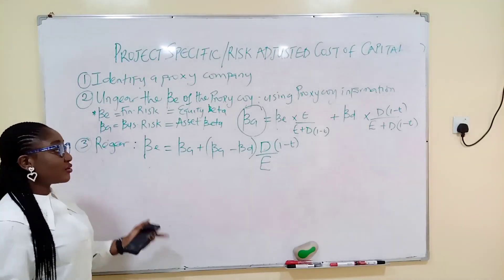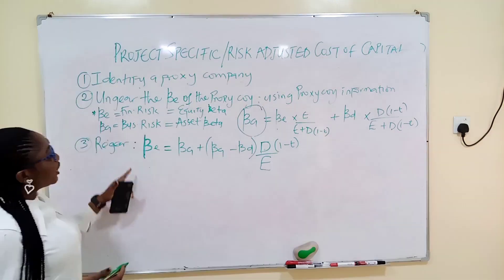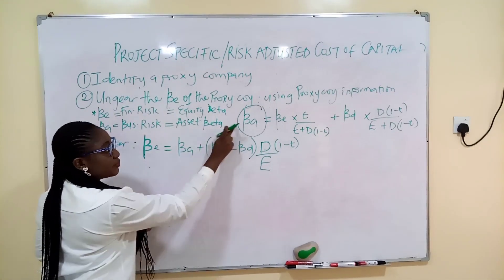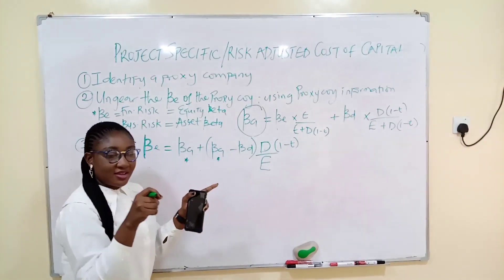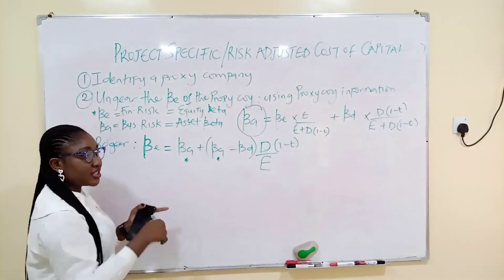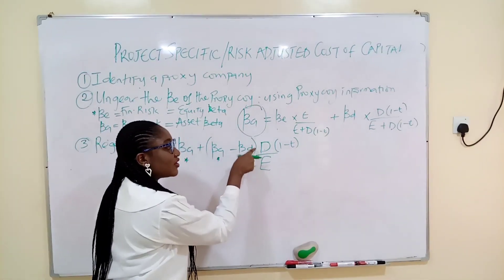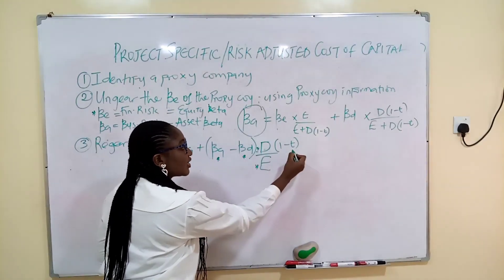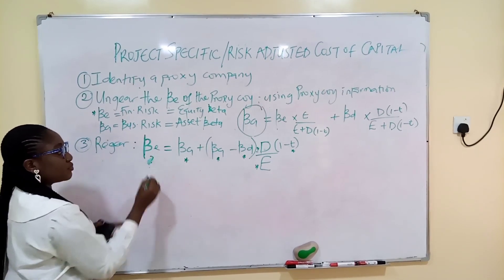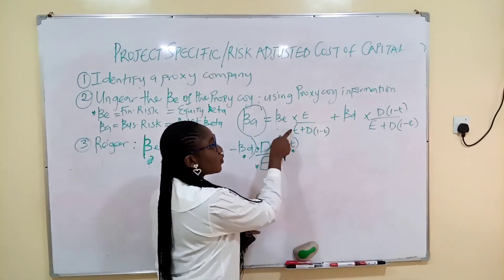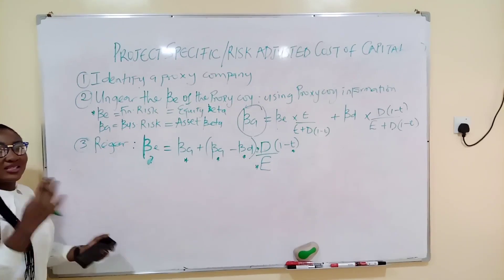This formula may remind you of the Modigliani-Miller formula. These are very easy formulas and they make sense once you practice questions. In the regearing formula, βa is the asset beta you got from ungearing — the business risk of the sandal business. βd is the risk of debt for the company of concern; sometimes the debt is risk-free, sometimes a percentage is given. The D and E values and the tax rate all refer to the company of concern.